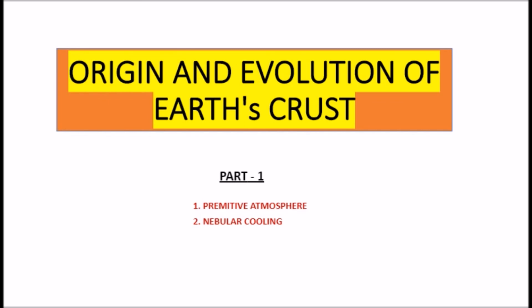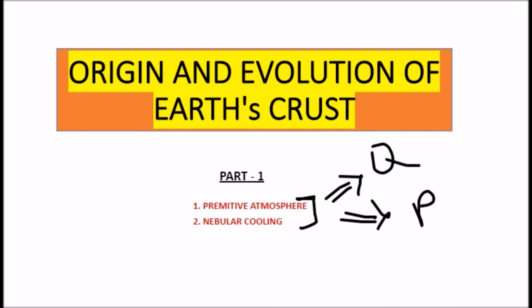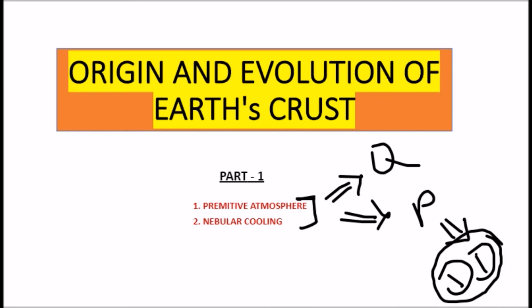Part 1 is the nebula. This is the primitive atmosphere of the primitive atmosphere. This is the nebula of the outside process. The process is the density differentiation — this is the density differentiation.